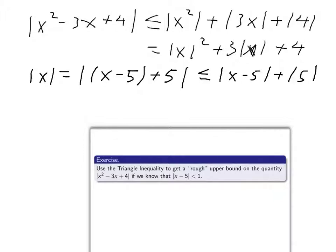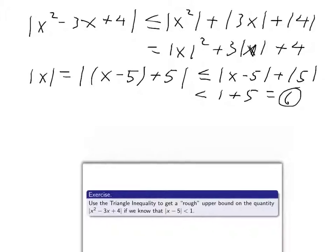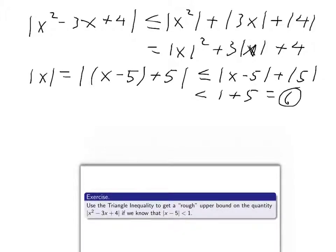Now, we know that absolute value of x minus 5 is smaller than 1, and 1 and 5 is 6. So there you see we've got that upper bound of 6 on absolute value of x.